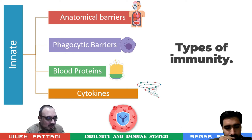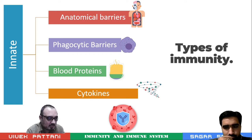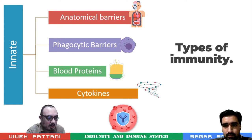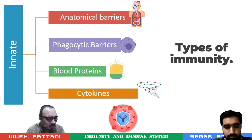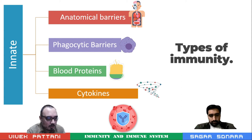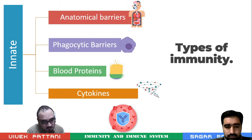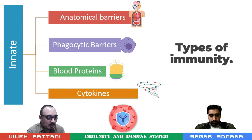Innate immunity, also known as non-specific or non-adaptive immunity, is the first line of defense against infectious organisms and does not depend on previous exposure — that is, the immunity existed before encountering the microbes. These non-specific host responses provide an effective barrier that prevents microbes from penetrating, inhibit or destroy the invader if it gains access to tissues.